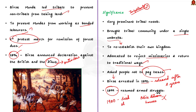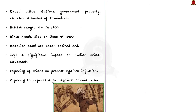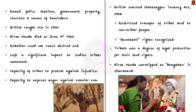Although the rebellion could not reach a decisive end, it left a significant impact on the tribal movement of India. It showed that tribal people had the capacity to protest against injustice and express their anger against colonial rule. The British enacted the Chhotanagpur Tenancy Act 1908, which restricted the transfer of tribal land to non-tribal people. Thus the Khuntkatti rights were recognized, and tribal people gained a degree of legal protection for their land rights. Because of all these efforts, Birsa Munda is presently worshipped as Bhagavan in the state of Jharkhand.